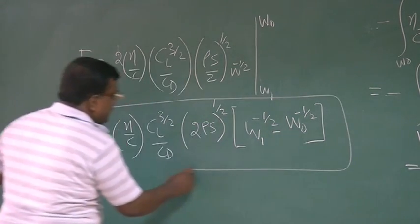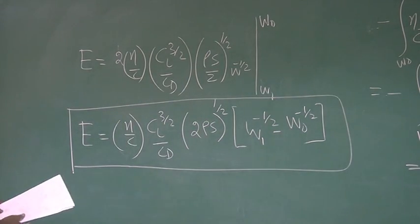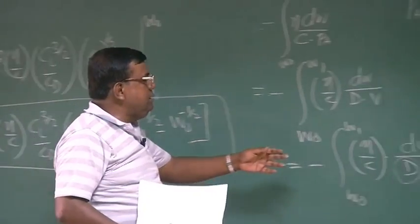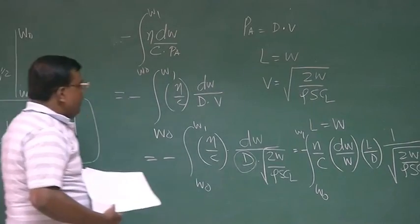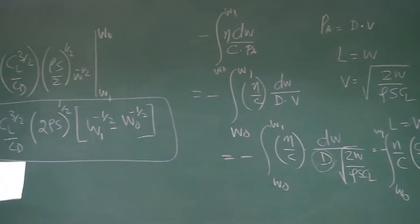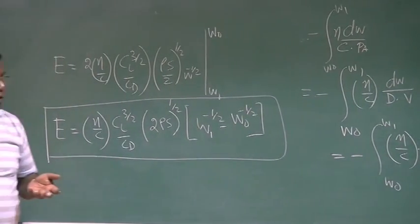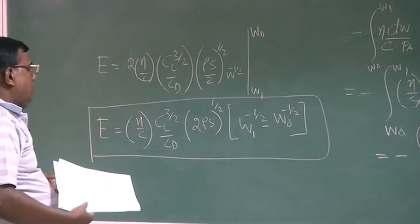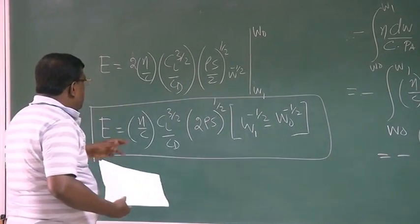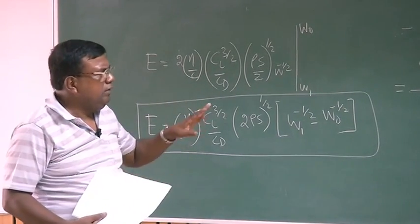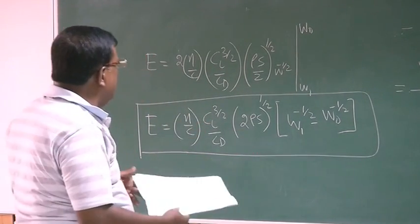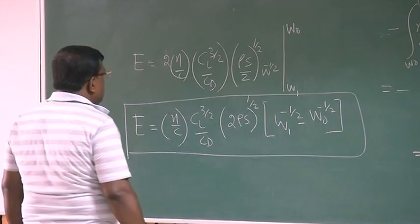Please note that when we arrived at this expression, we have taken out η by C outside this integration. We have assumed that there is no effect on C because of change in weight. Also you should remember that C does change with altitude, but here for simplicity we have assumed it will be constant. What is more important here?